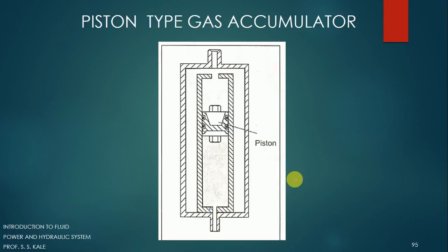The next type of accumulator we are going to see is called a piston-type gas accumulator. In this case we are going to use a piston. This is the casing. From the top, gas can be filled in, whereas the fluid can be filled from the bottom. The gas occupies the upper portion, and the same gas pressure is applied over the piston.